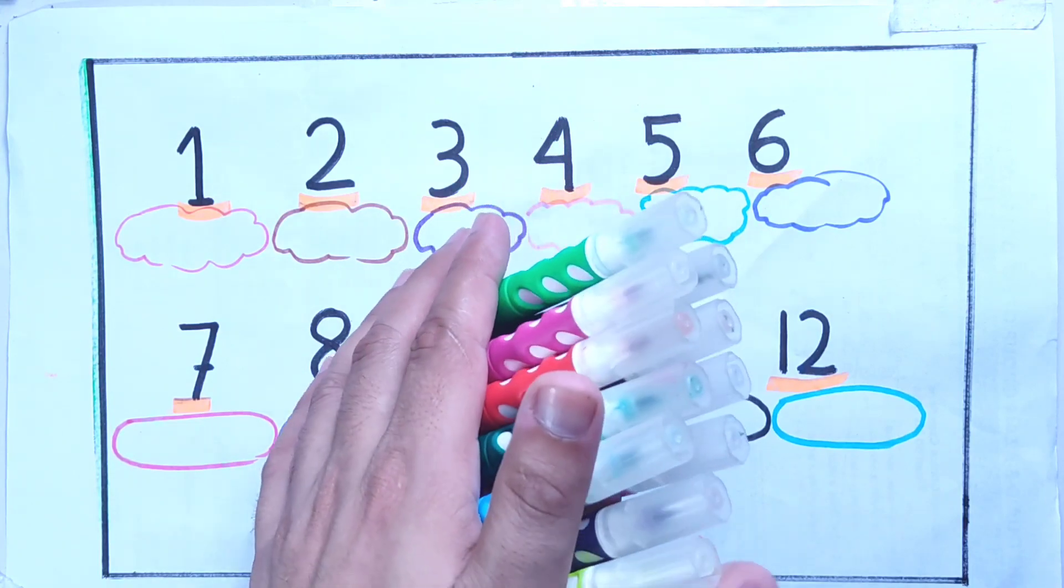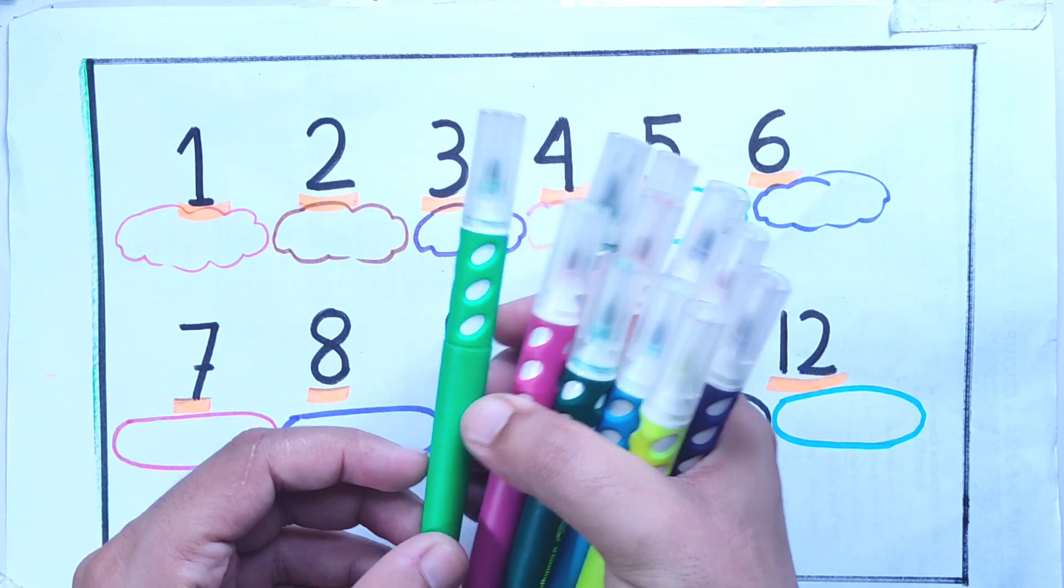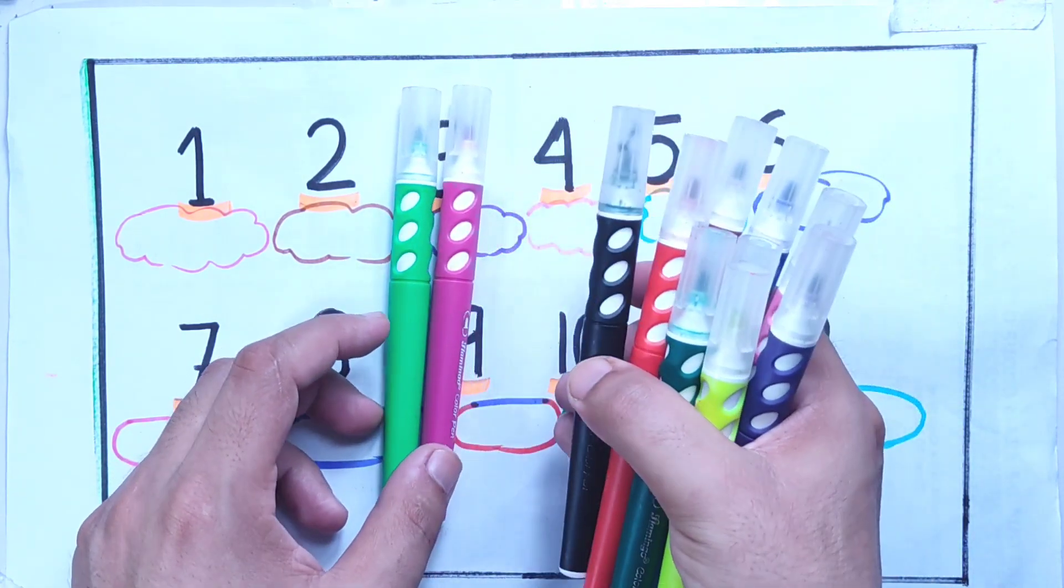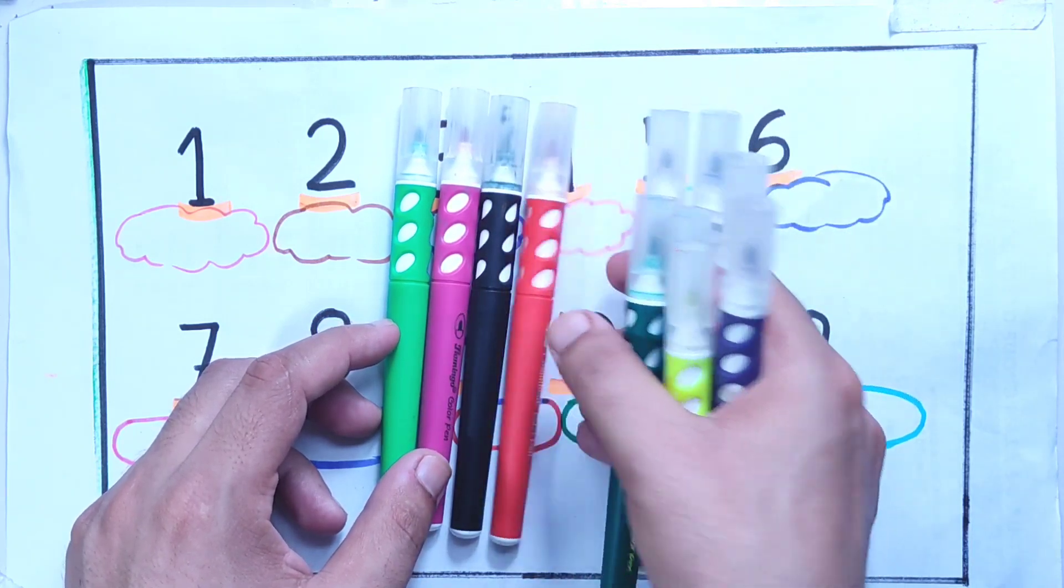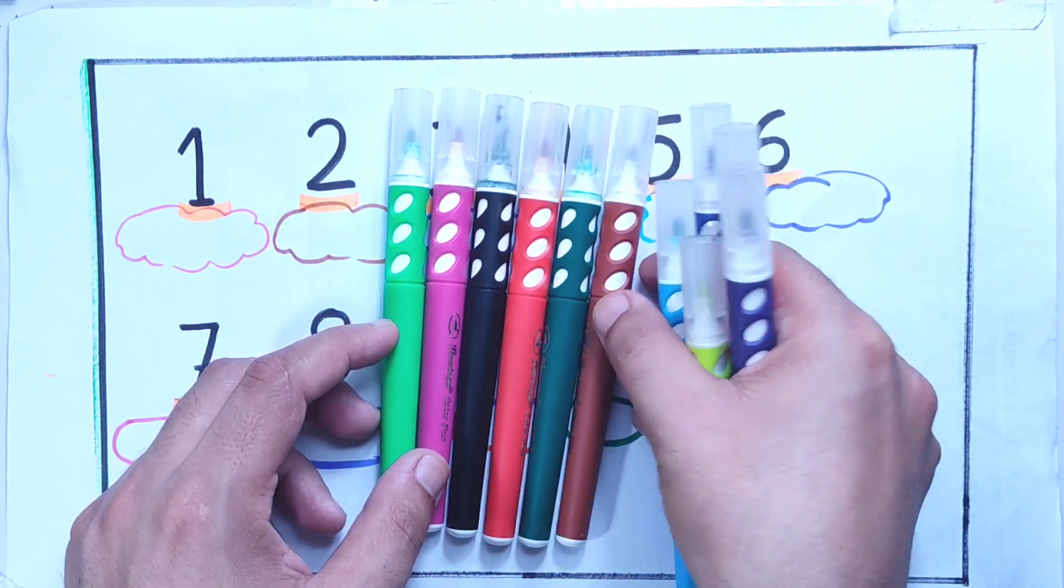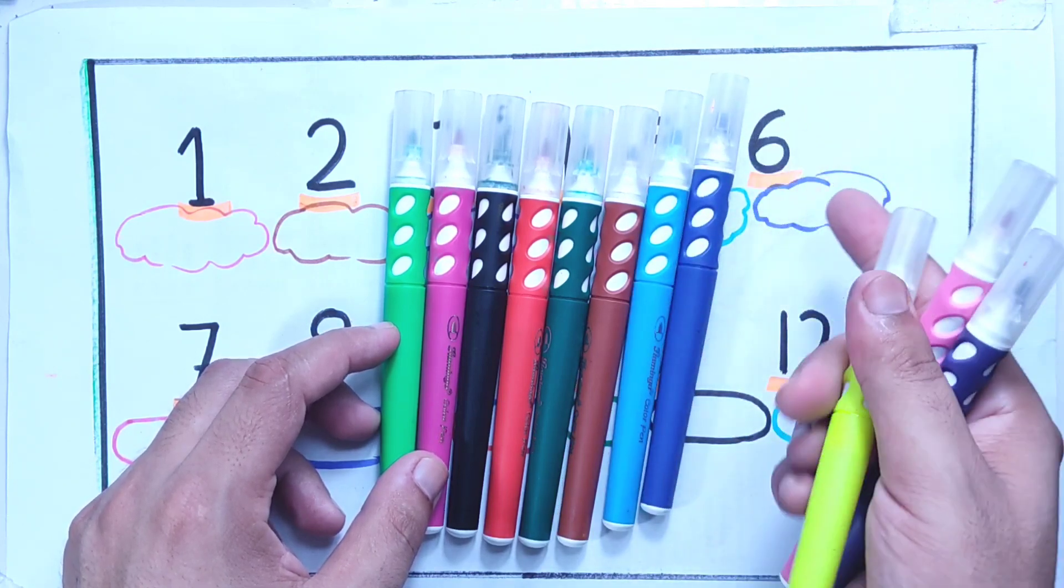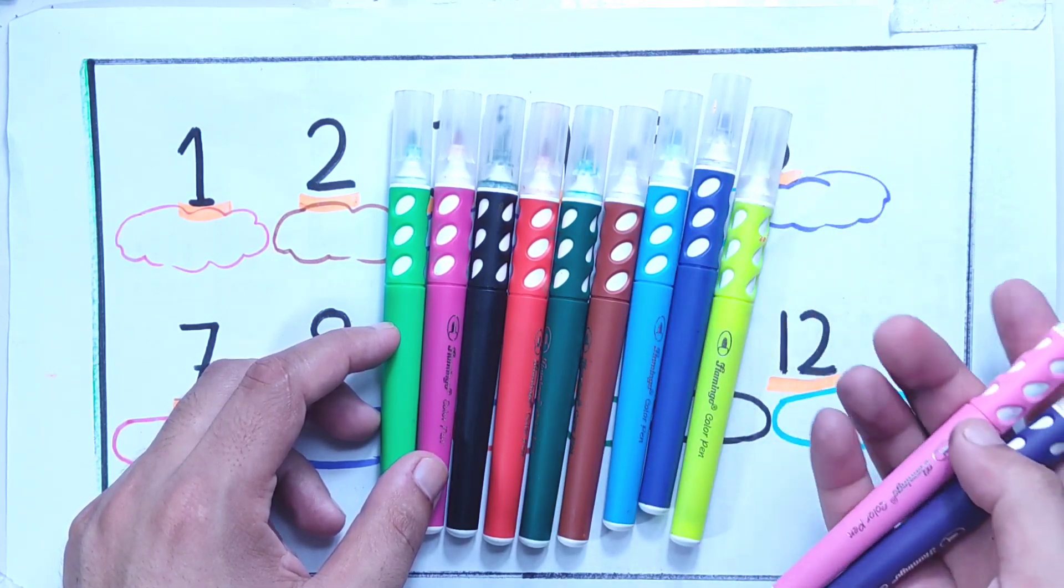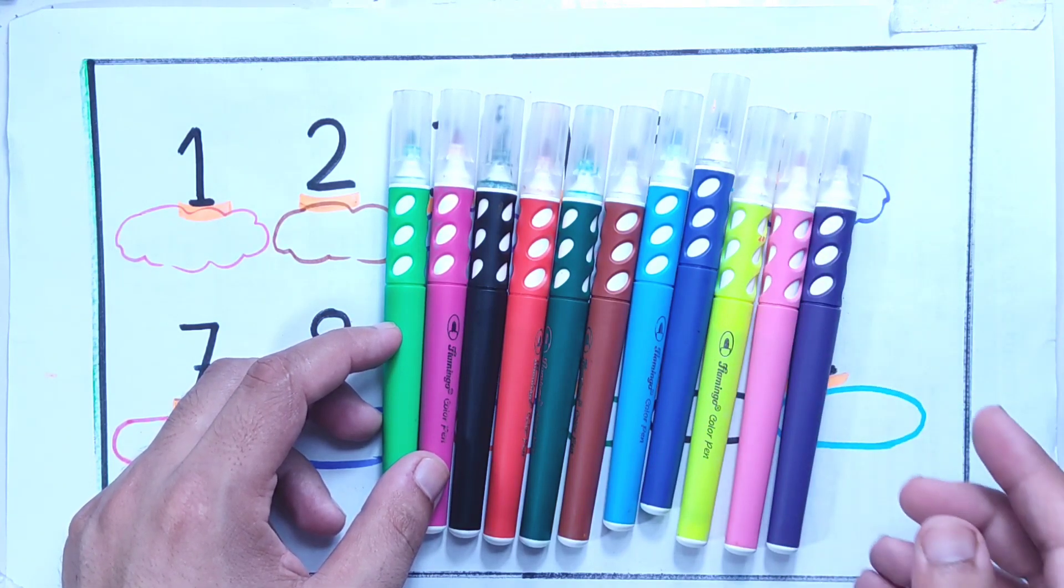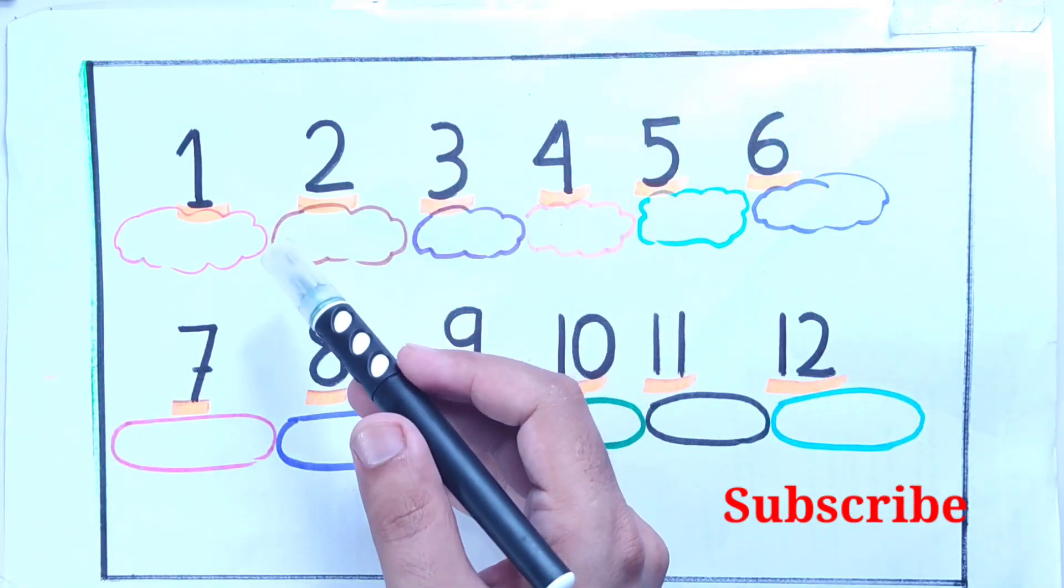Hello kids, welcome to Kids Education with Fun. So let's study these colors: light green color, purple color, black color, red color, dark green color, brown color, sky blue color, dark blue color, yellow color, pink color, and violet color. So in this video I am going to write down the names of different numbers from 1 to 12.